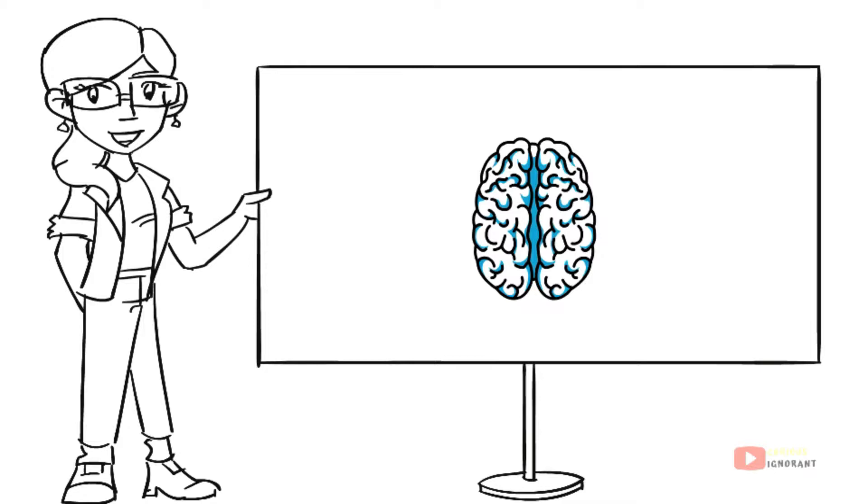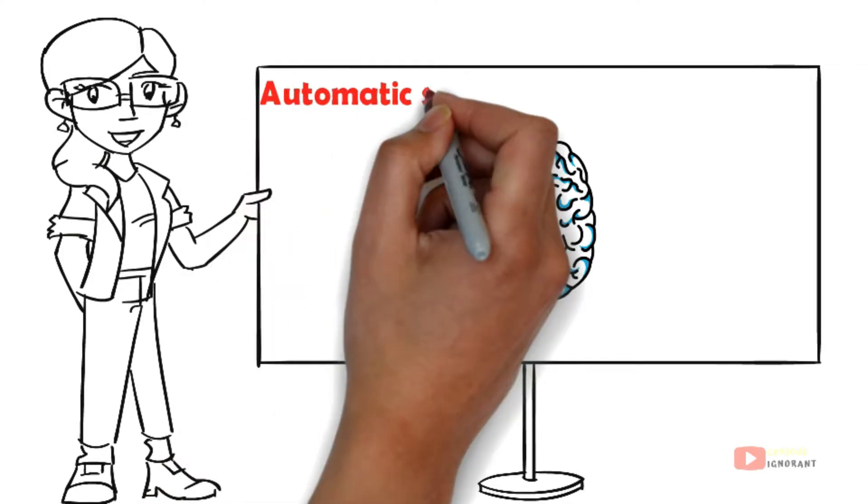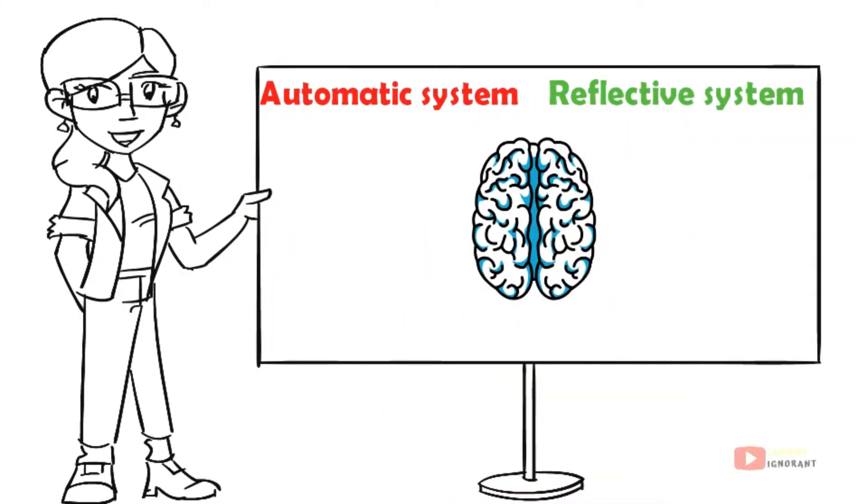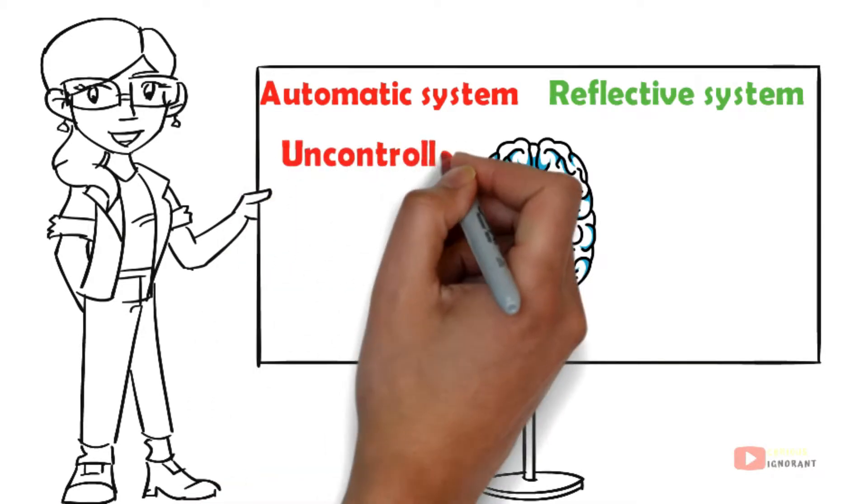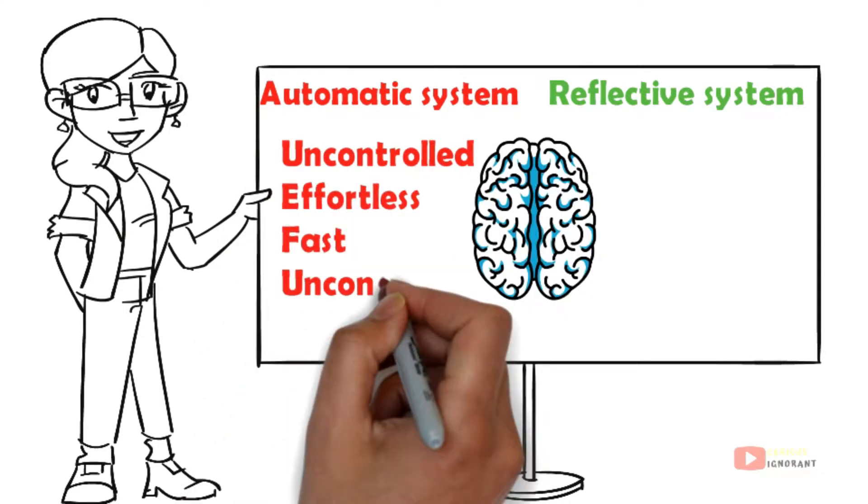The human brain consists of two different thinking systems: automatic system and reflective system. Automatic system: uncontrolled, effortless, fast, unconscious.